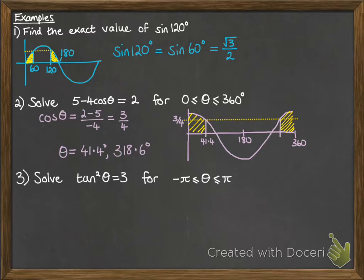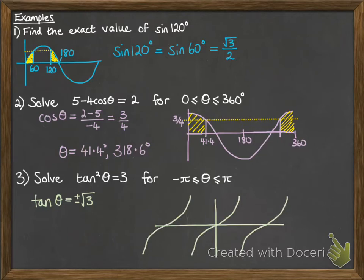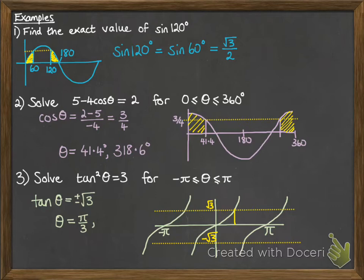Tan squared θ equals 3. So that means that tan θ is plus or minus the square root of 3, and we're looking for θ between -π and π, so we'll draw our little tan curve there between -π and π. We're looking for where it's equal to the positive root 3 or the negative root 3, so we're looking for that value there, which gives us π/3, if we read off of our table that we did on the previous slide.